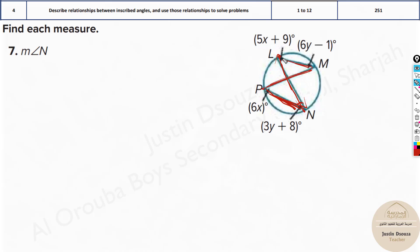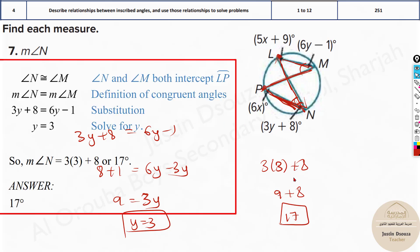And even over here we know it's having the same point. So that means angle M and N are equal. Now we know M is 3Y plus 8. That equals 6Y minus 1. So solve for Y. Take 3Y to the other side and minus 1 to the other side will be 8 plus 1 equals 6Y minus 3Y. You will have 9 equals 3Y. Y equals 3. So it will be 3 times 3 plus 8, that's 9 plus 8, it will be 17. So measure of angle N is 17 degrees.